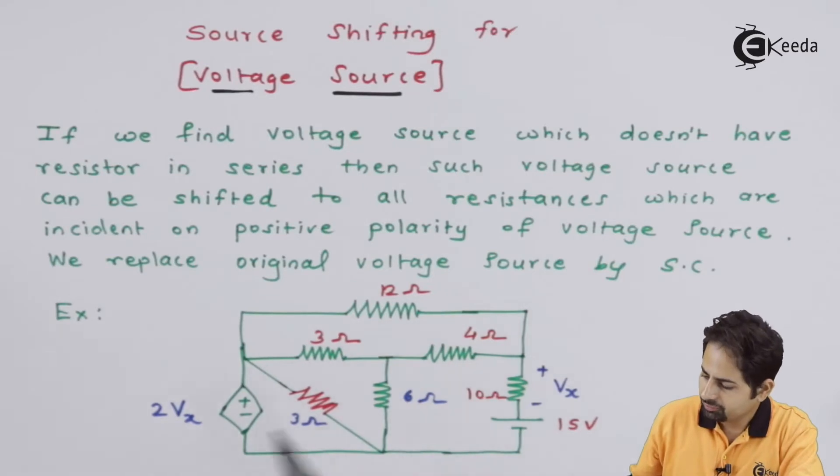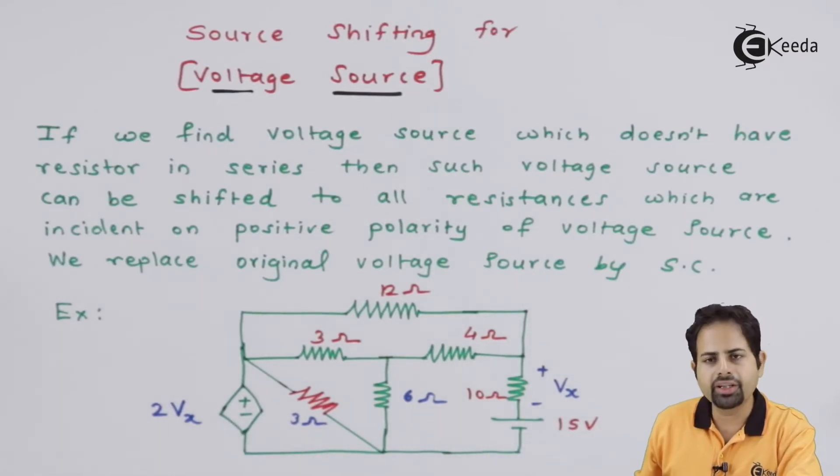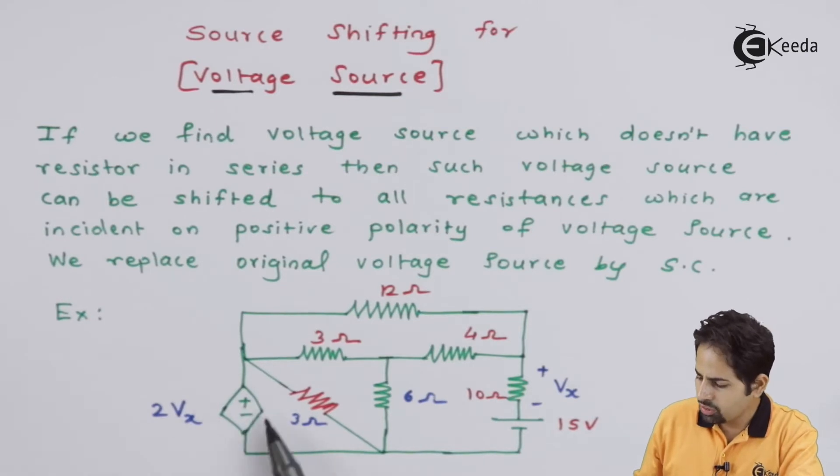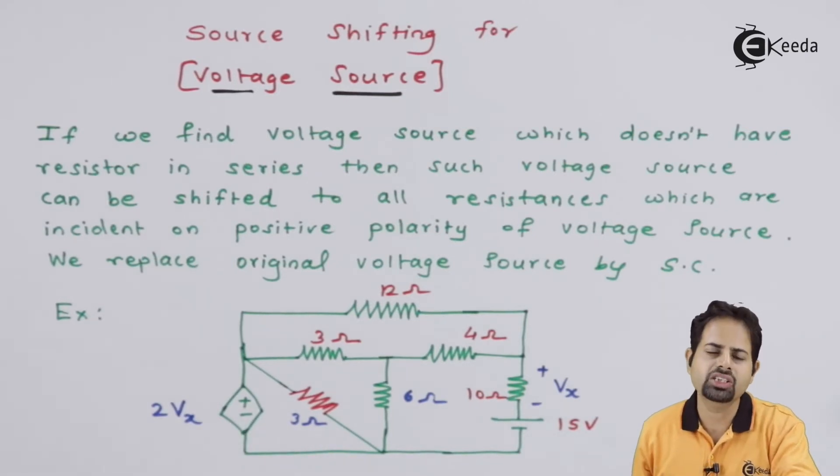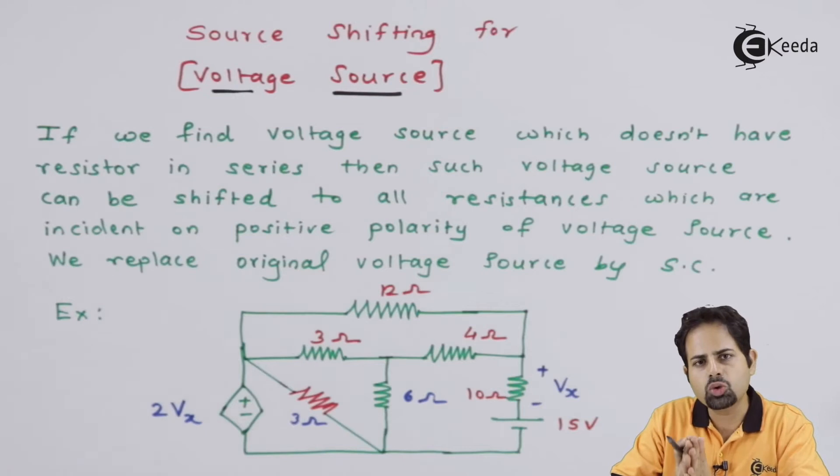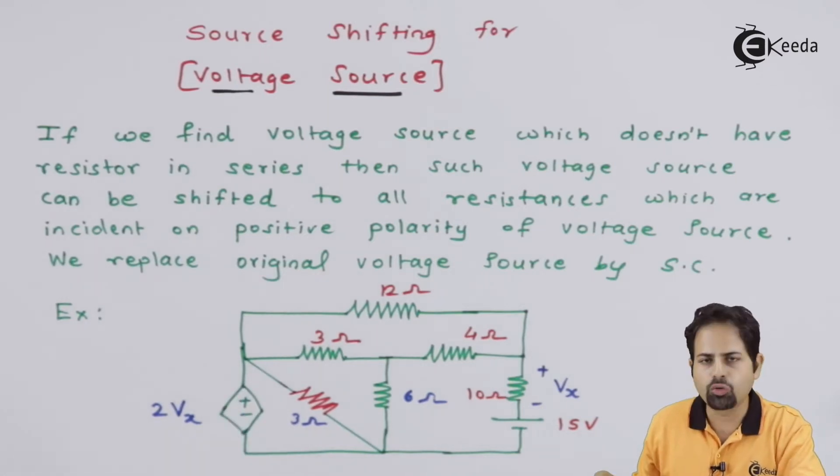Here you can see, I have drawn one circuit where there is a dependent voltage source, but to this voltage source there is no resistance in series. If we want to apply source transformation we need a series resistance with a voltage source which is not the case here.